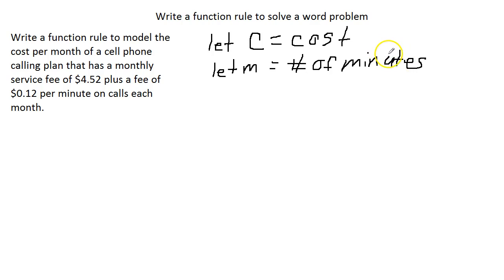Okay, so cost per month is going to be, our variable is M, so we say C of M. Cost per minutes is going to be our monthly fee, $4.52, so 4.52, plus our cost per minute, which is 0.12, times the number of minutes.